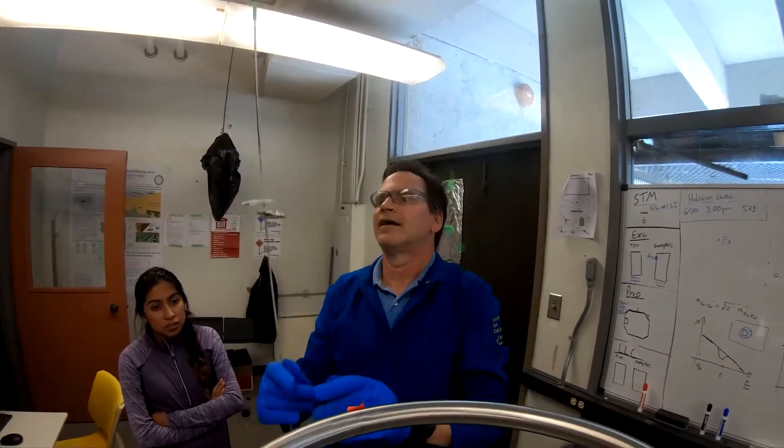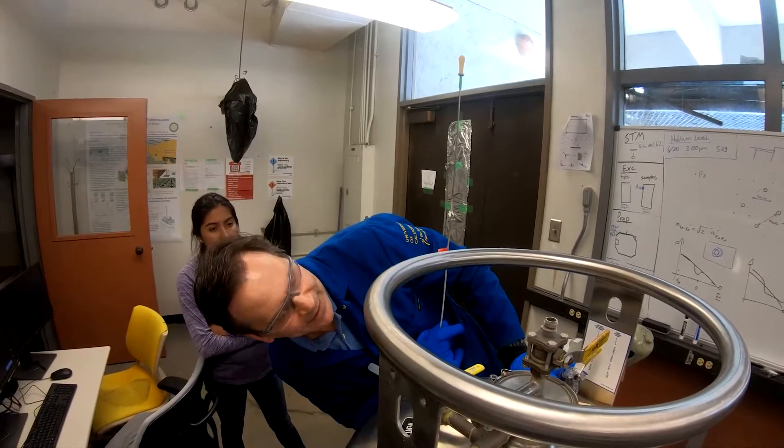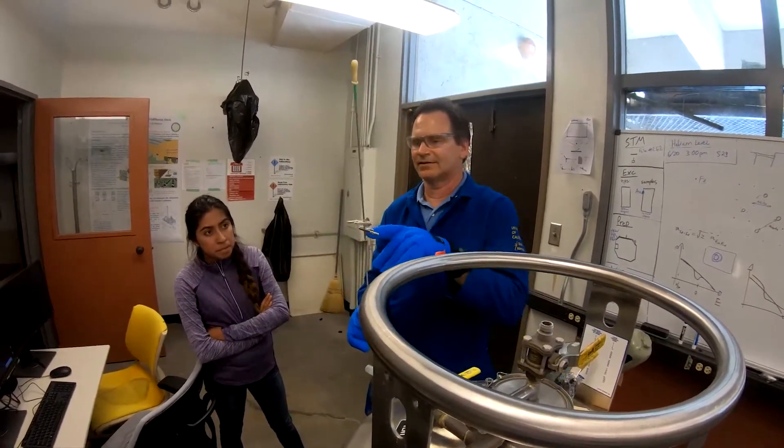Dipstick comes off your dewar, and then you can measure that difference. And one inch is one liter on this scale, so there's less than a liter in this dewar. And that's how you dip a dewar.